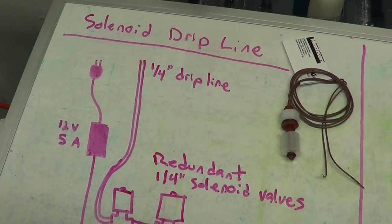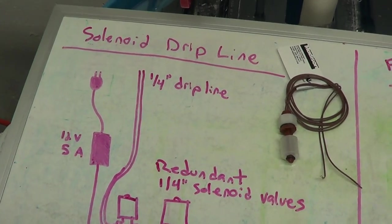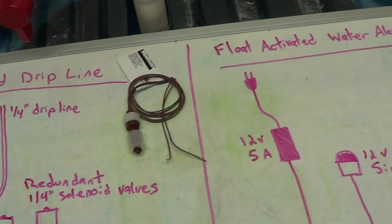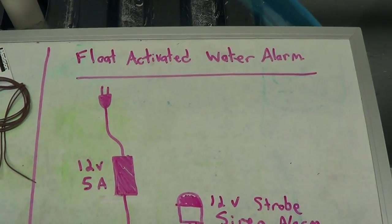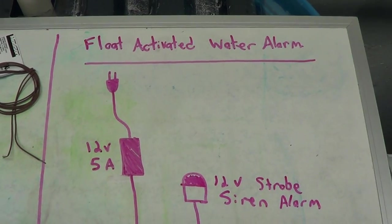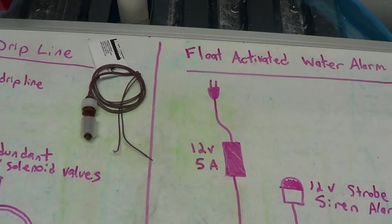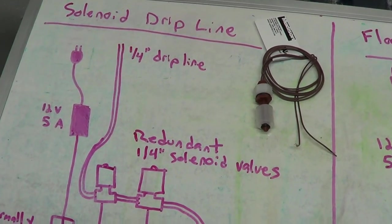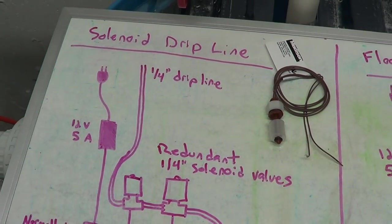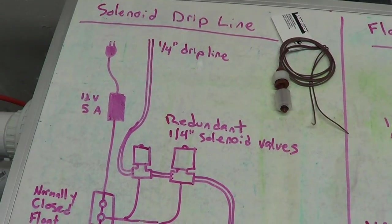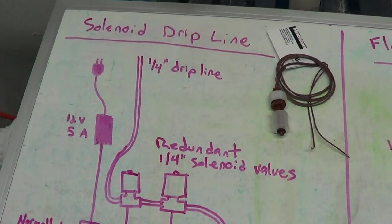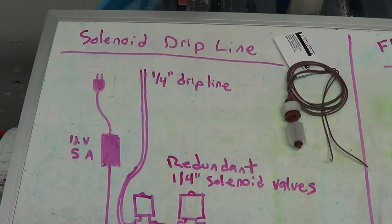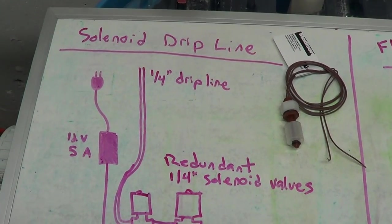But what I wanted to do since I teased it on Monday was explain to you my plans to build a redundant solenoid drip line and also to build a float activated water alarm system. As you might imagine, both of these projects will come in very handy in the fish room and they're both actually pretty low-cost solutions. So let me walk through the diagrams here starting with the redundant solenoid drip line.